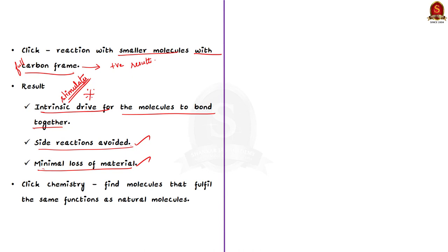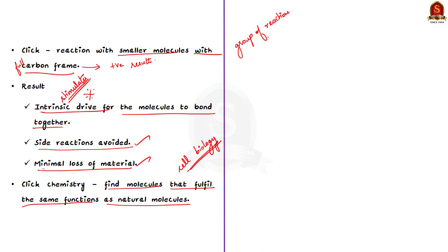One among the scientists says that even if click chemistry cannot provide exact copies of the natural molecules, it will be able to find molecules that fulfill the same functions. So this offers us insights into cell biology. In summary, click chemistry is a group of reactions that are fast, simple to use, and give high product yields — versatile, highly reliable, and applicable to both small and large scale production. Its application is in medicine to target and block pathogens in cells.